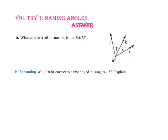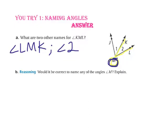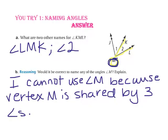Let's check your answers. Part A asks: what are two other names for angle KML? Here is angle KML. We can't use the vertex letter because it shares two other angles. So one name is angle LMK — just going backwards — and since there's a 2 inside the angle, we can also call it angle 2. For part B, it says: would it be correct to name any of the angles angle M? Because M is shared by three angles, we cannot just say angle M — there would be no way of knowing which of the three angles we were referring to. So no, we cannot use angle M to name any of those angles.